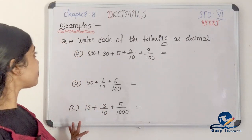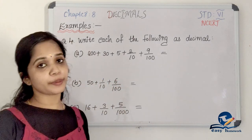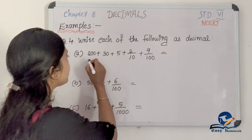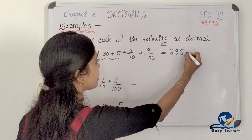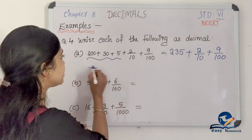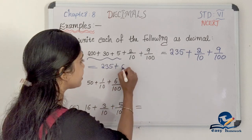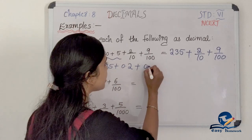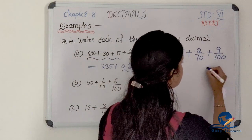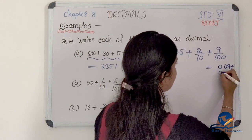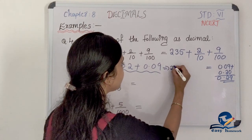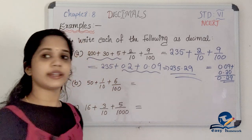Question 4: write each of the following as a decimal. First, 200 + 30 + 5 + 2/10 + 9/100. The whole number part is 235. Then 2/10 is 0.2 and 9/100 is 0.09. So the answer is 235.29.